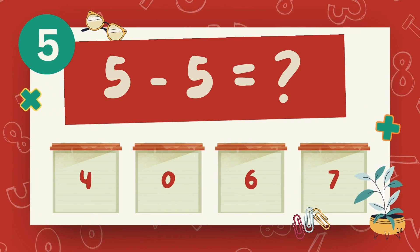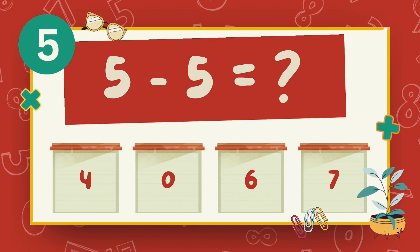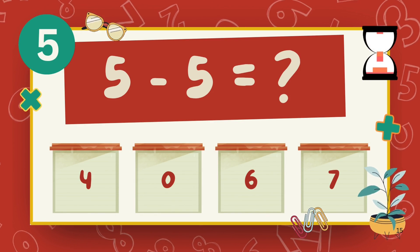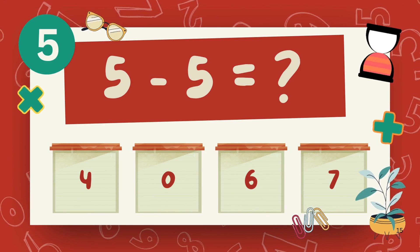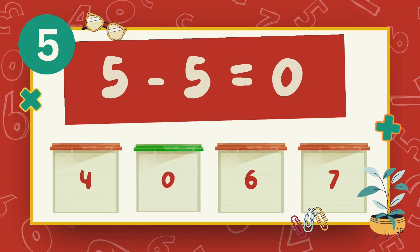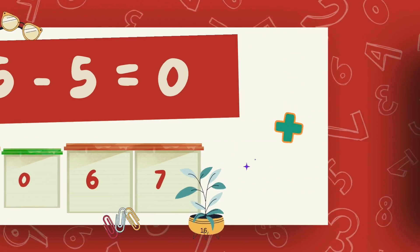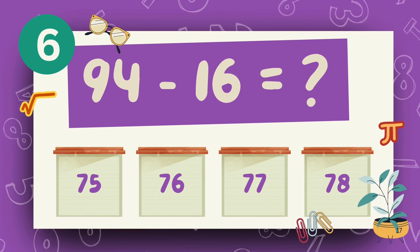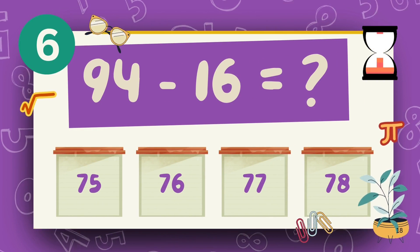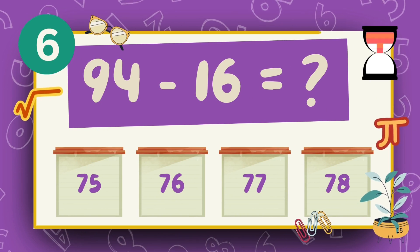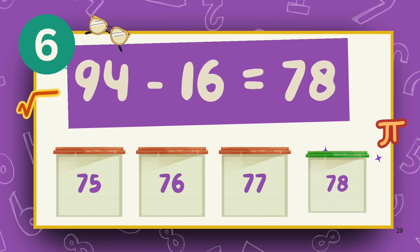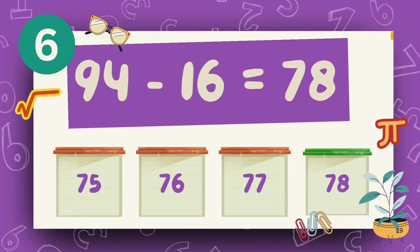What is five minus five? The answer is zero. What is 94 minus 16? The answer is 78.